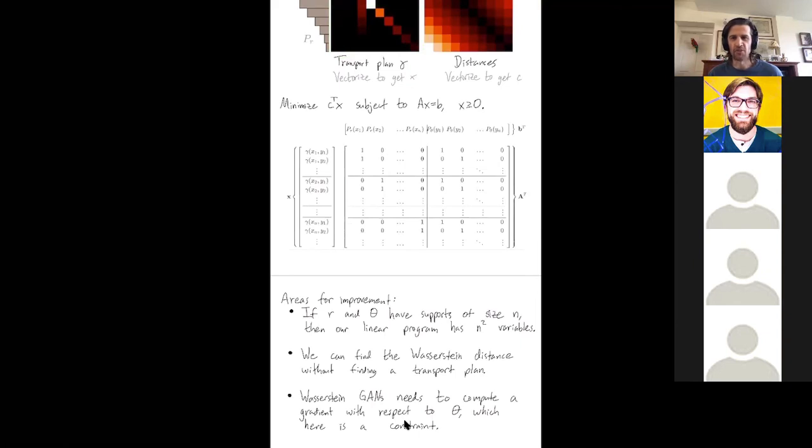Finally, another problem is that in training neural networks, you often take gradients. And in the particular application of Wasserstein GANs, you need to train by computing a gradient with respect to theta. Theta is incorporated for us as our constraints. We have all these constraints where theta appears in the marginals, giving half of our constraints. So when things are in the constraints, it's hard to take a gradient with respect to them. It's much easier to take a gradient with respect to things in the optimization function.